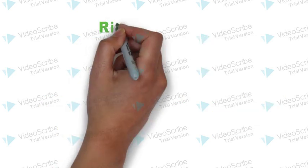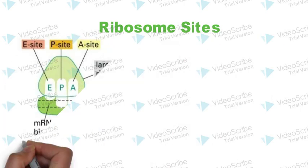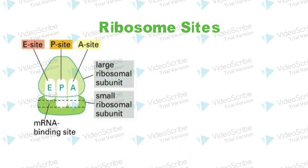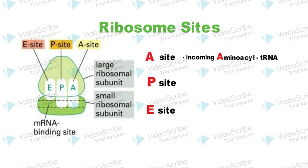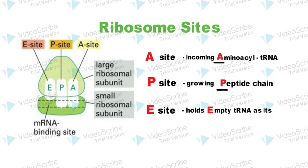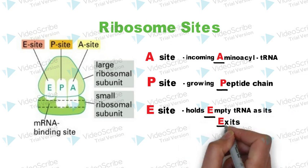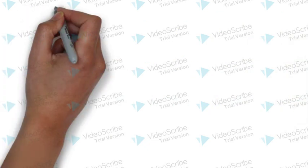The next mnemonic is related to the three sites on the ribosome. There are three sites: A site, P site, and E site. On the A site, the incoming aminoacyl-tRNA comes and binds — remember A for aminoacyl. At the P site, peptide chains are grown — remember P for peptide. On the E site, the empty tRNA exits — remember E for empty or exit.